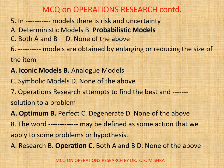Question 5. In Dash Models, there is risk and uncertainty. A, Deterministic Models. B, Probabilistic Models. C, Both A and B. D, None. Correct option is B, Probabilistic Models.